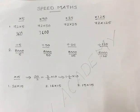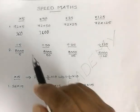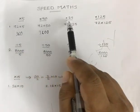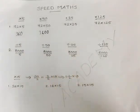Good morning. Today we'll discuss certain short tricks in math. First of all, multiplication with 5, 50, 25, and 125.